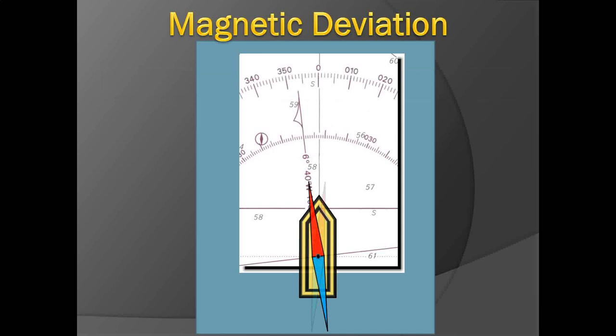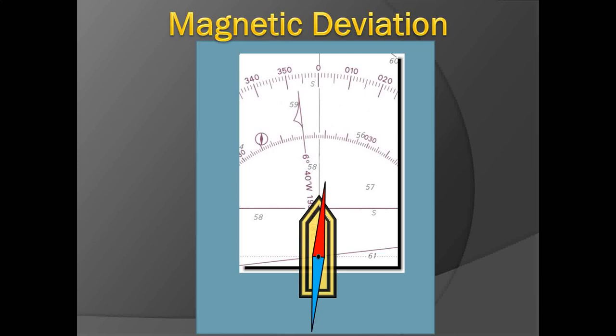Deviation changes with heading. The deviation is the angle between the magnetic meridian and the true direction of the compass needle. The compass needle gets influenced by the ship's own magnetism, so instead of pointing towards true magnetic north it points towards the compass north. Deviation is therefore the angle between the magnetic meridian and the true direction of the compass needle.